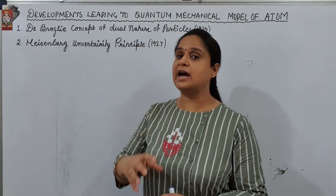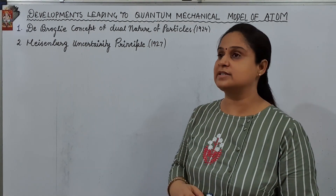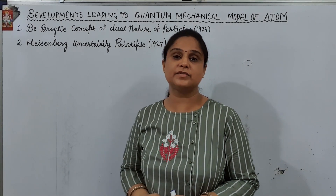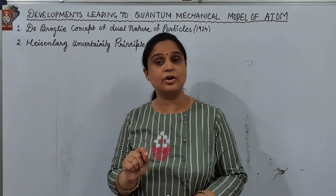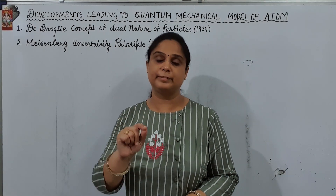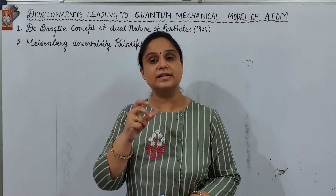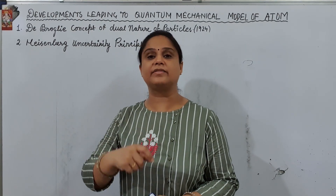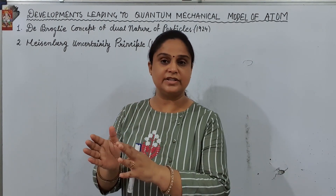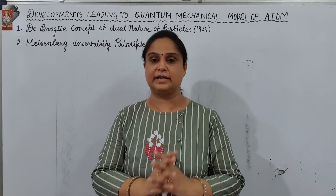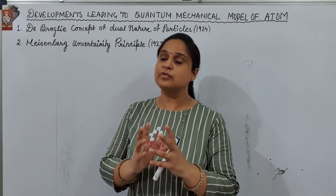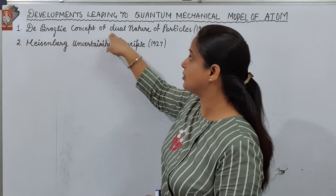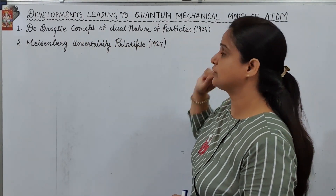We are now going to consider this new model. This new model does not consider the electron as just a particle. It considers that the electron is also having two natures — that is wave nature and particle nature. So first of all I am talking about the de Broglie concept of the dual nature of the particle.